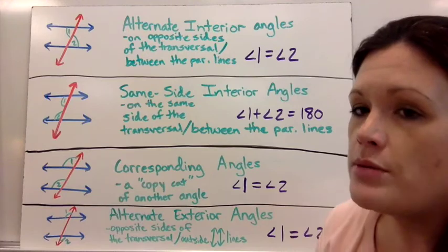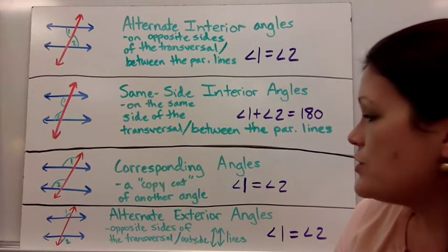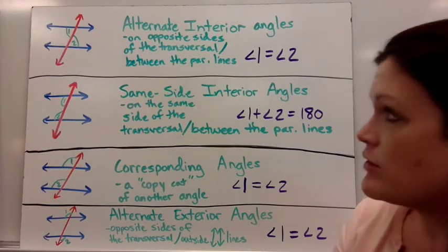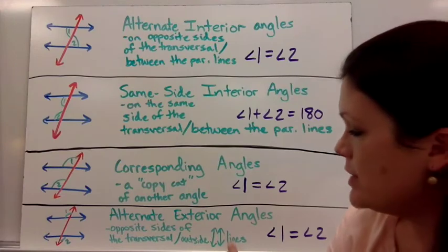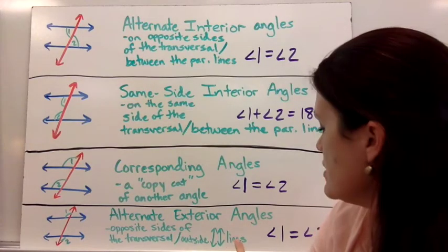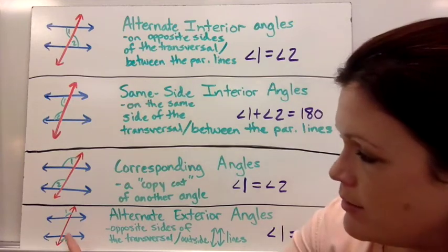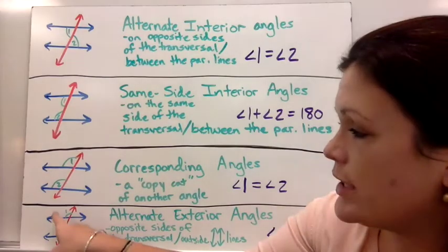I'm just labeling one pair so it doesn't look too confusing in my drawing. And then for alternate exterior angles, that's the type that are very similar to alternate interior. But I decided to include these since sometimes you might be asked about alternate exterior. They work the same way. It's just that they're outside the parallel lines. So they're on opposite sides of the transversal and they are equal.